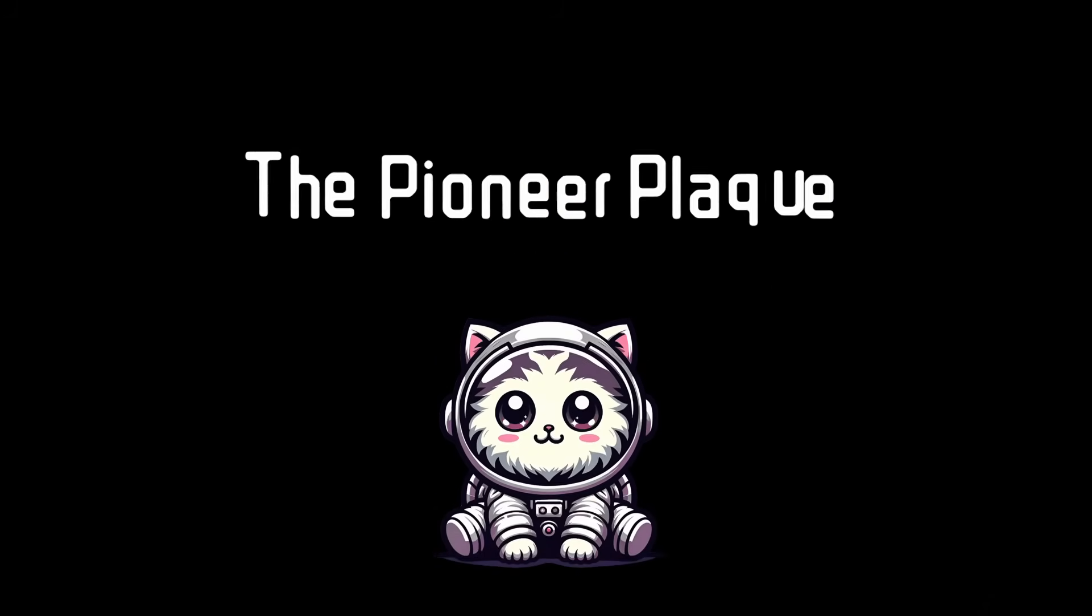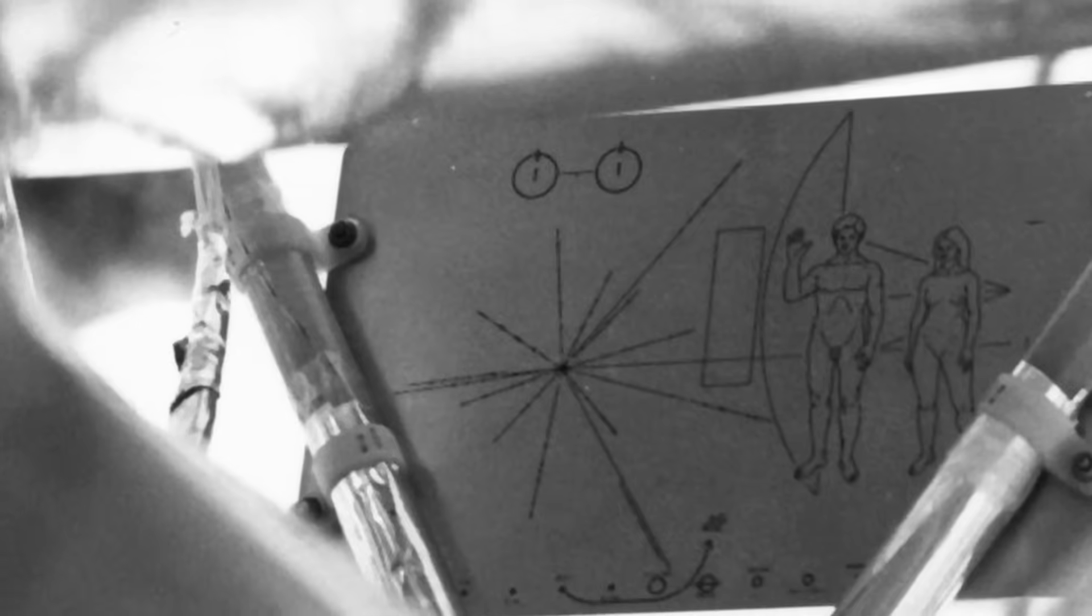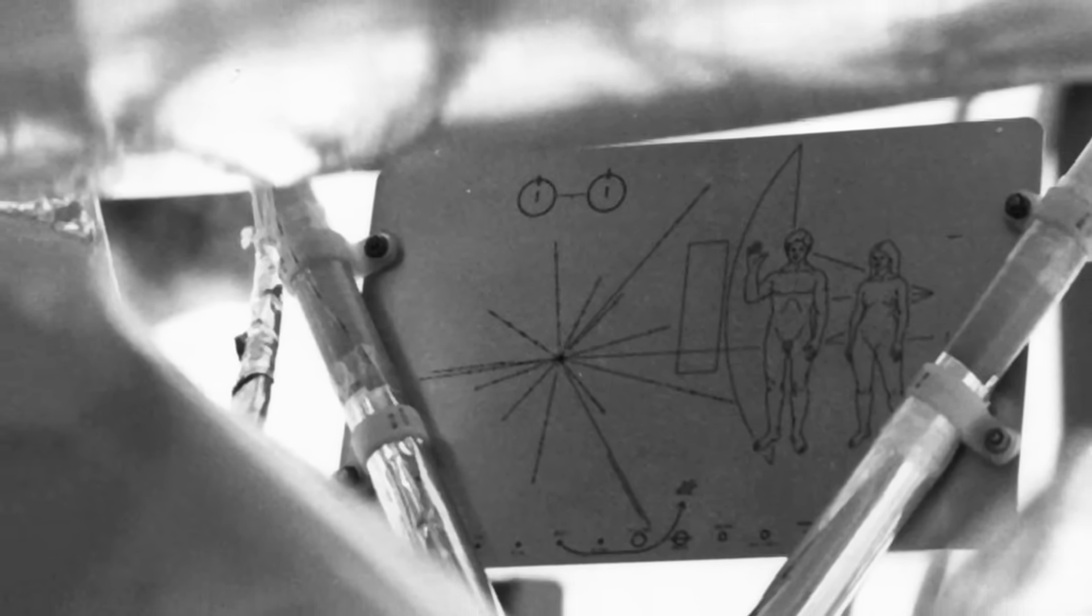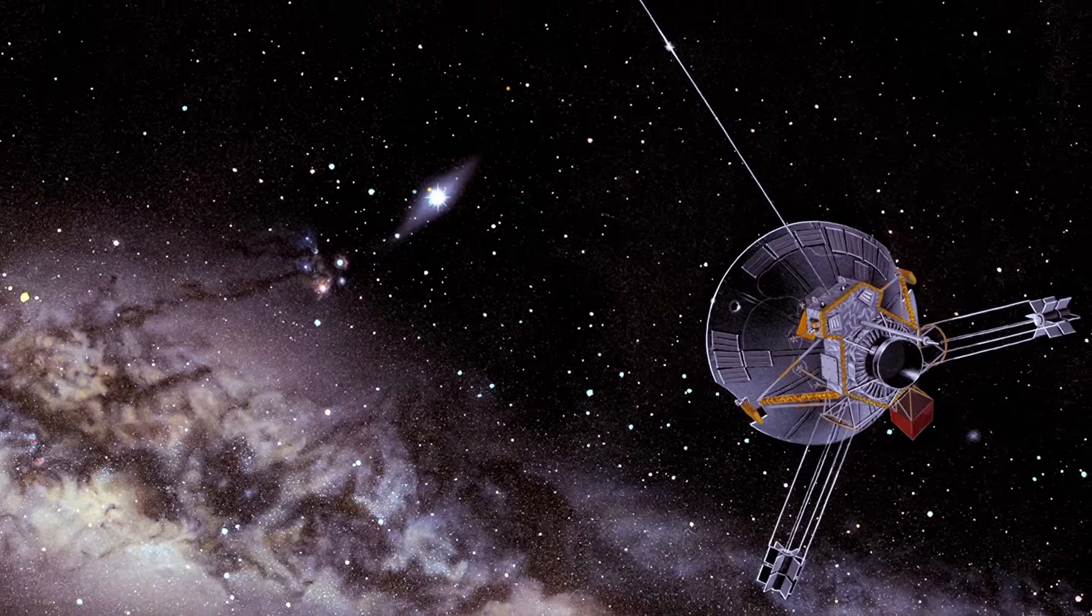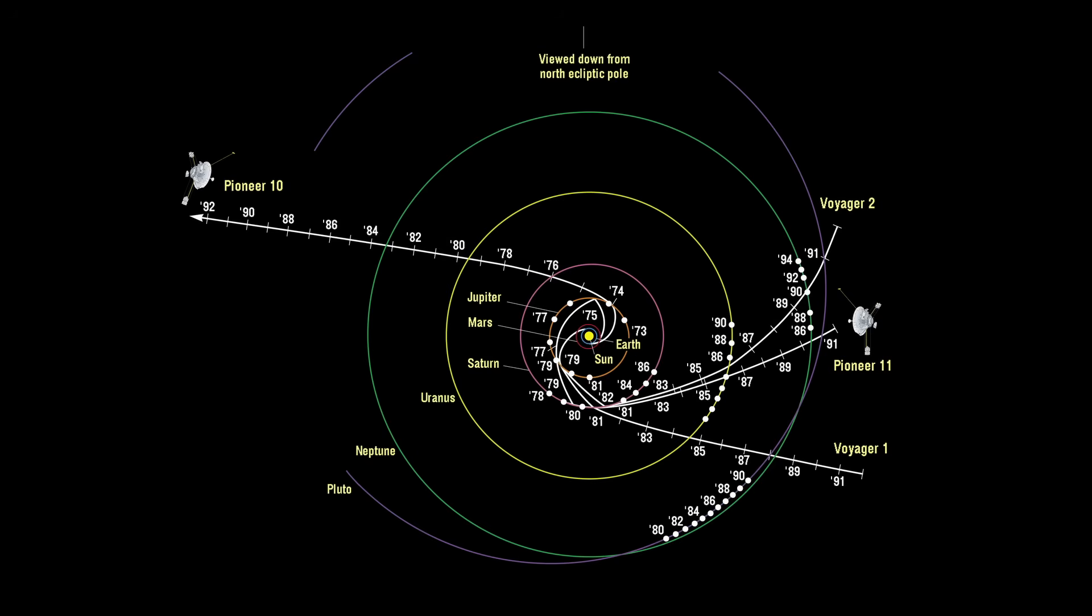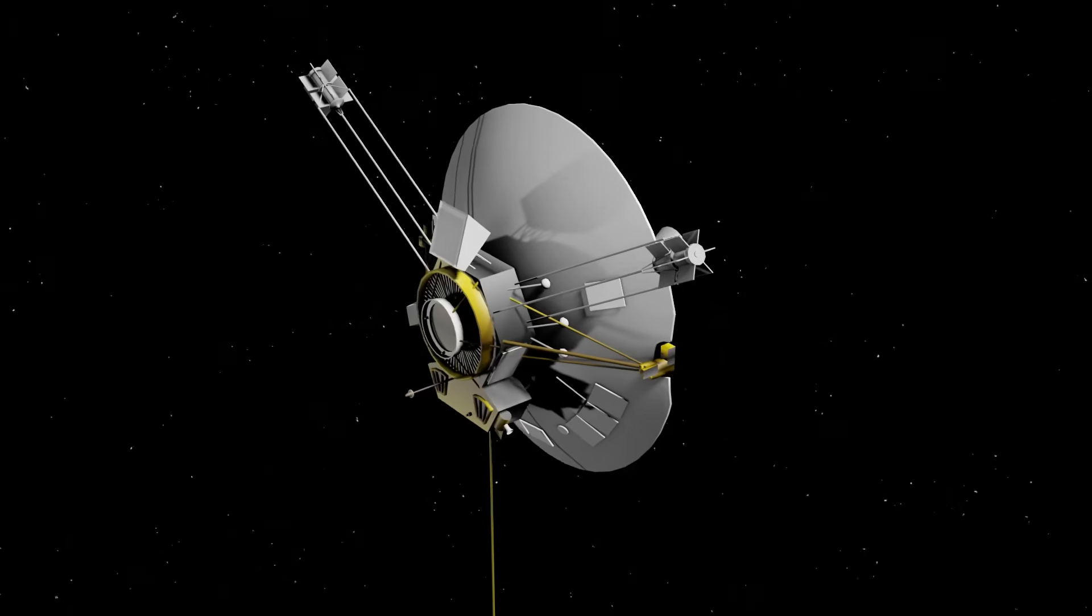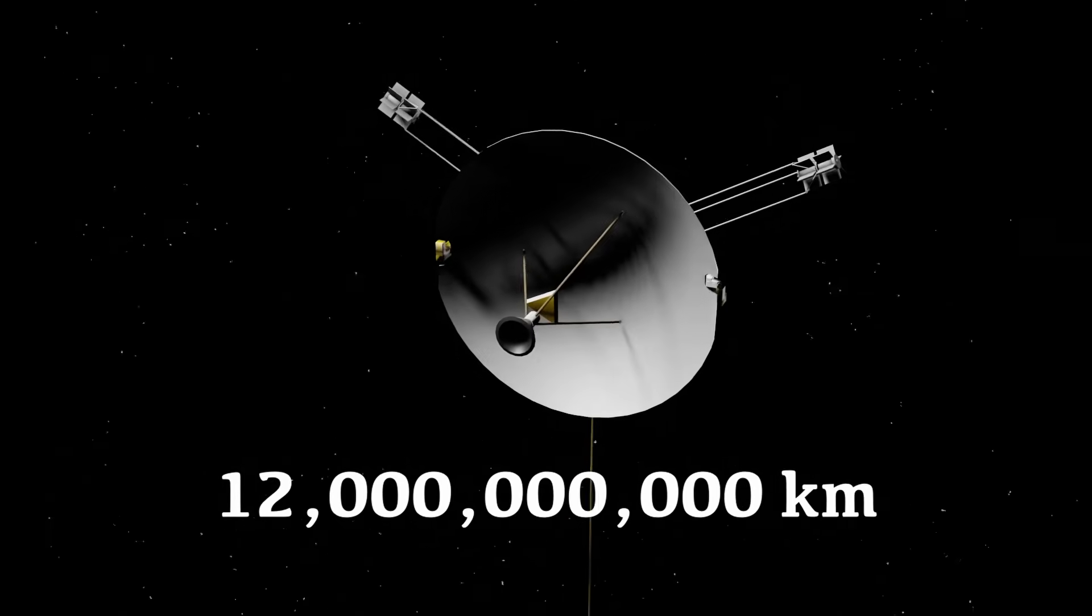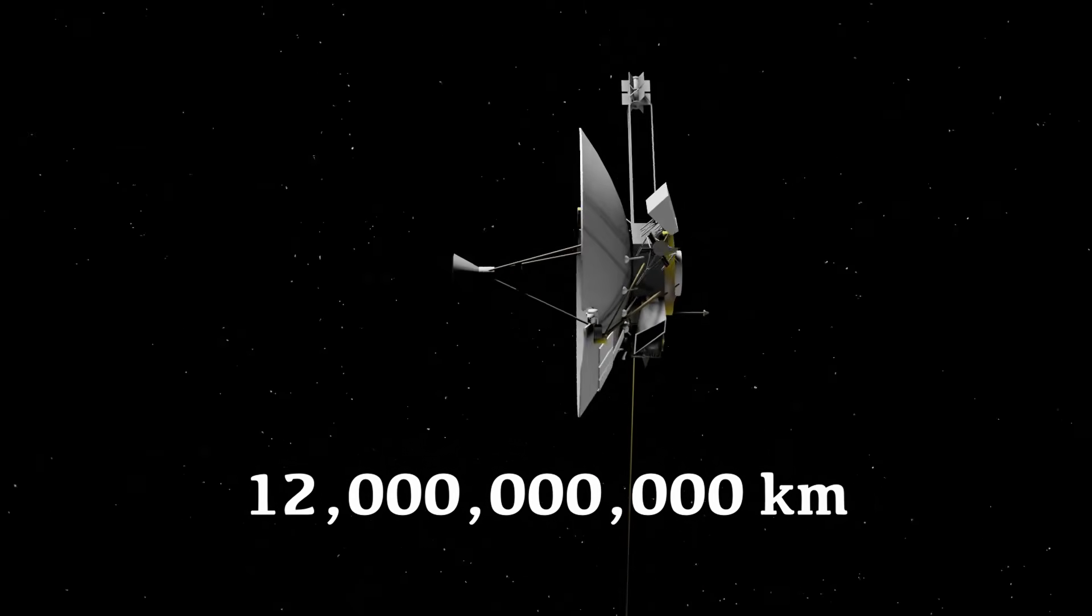So NASA actually made three of these, not one, and they etched it onto gold anodized aluminum plaques. One was placed onto the Pioneer 10 space probe in 1972, which headed to Jupiter. And it was actually the first of five artificial objects to achieve the escape velocity needed to leave our solar system. We lost contact with it in 2003, so 31 years later. And by this time, it was about 12 billion kilometers from Earth.